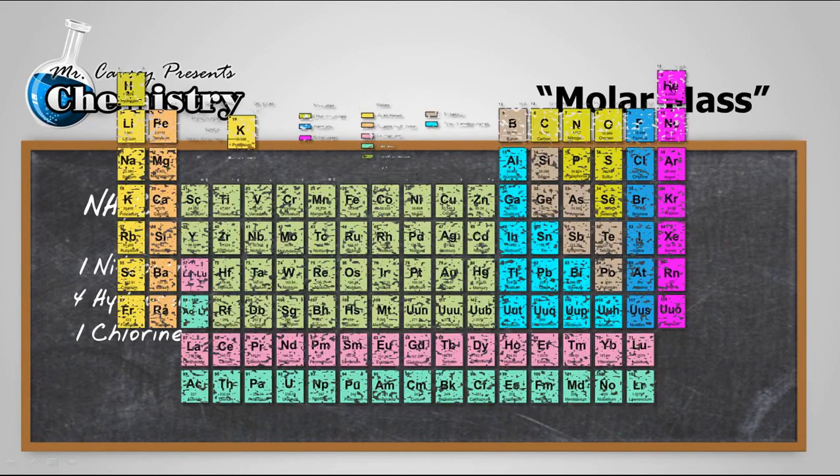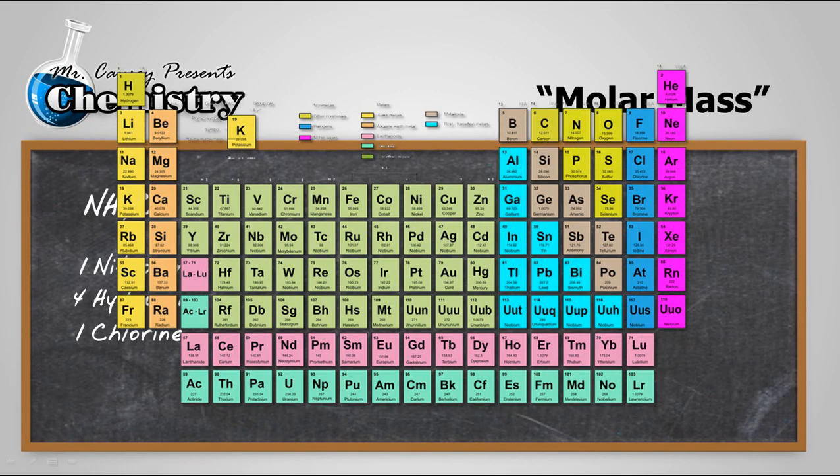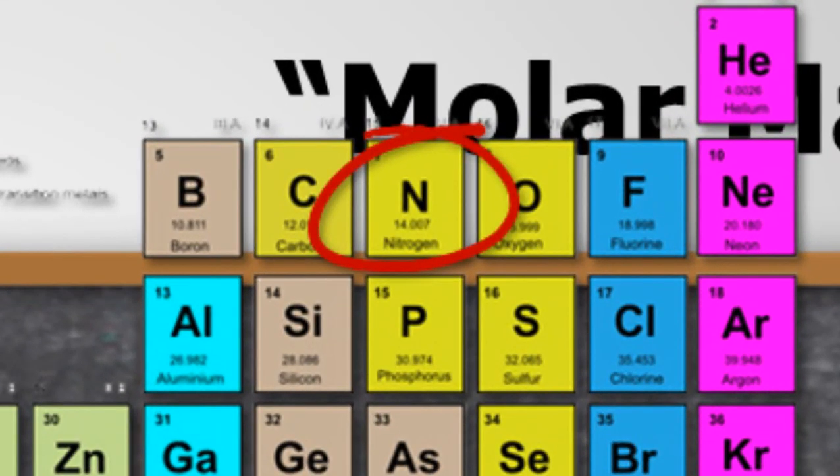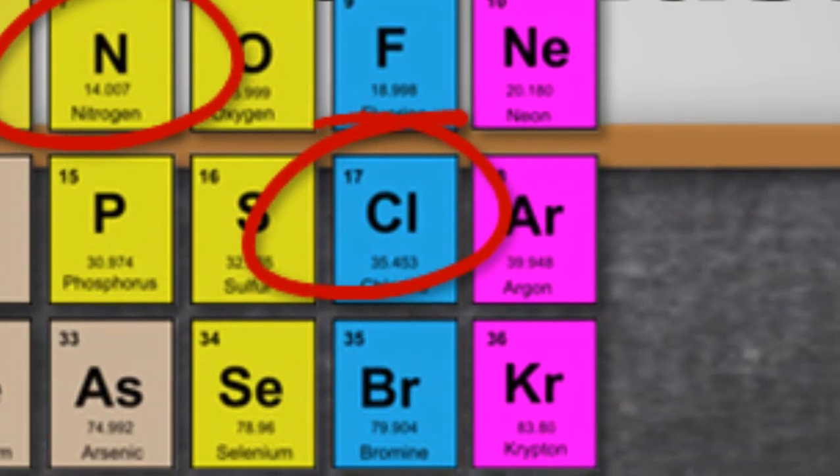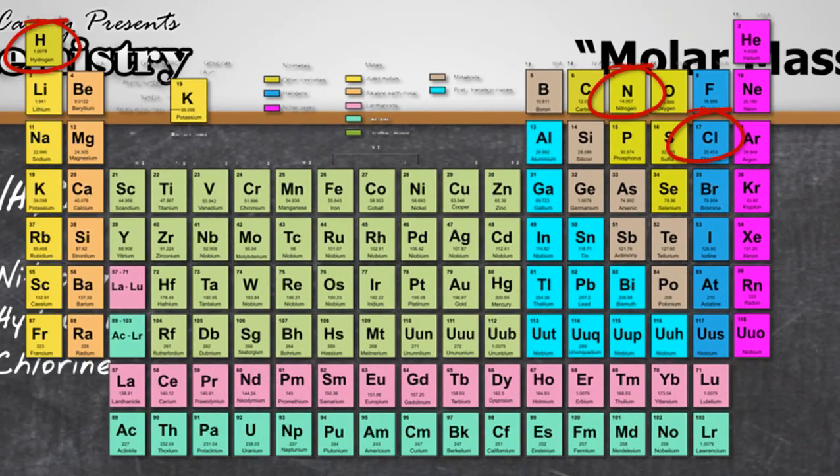So to the periodic table, and as we look at the periodic table, we can find our nitrogen and our hydrogen and our chlorine. Now you should have your periodic table out and looking all these up, we know that hydrogen is 1.01. I'm going to use nitrogen 14.01 and chlorine as 35.45. I'm going to take and make all of these two decimal places. That way I can determine my sig figs.